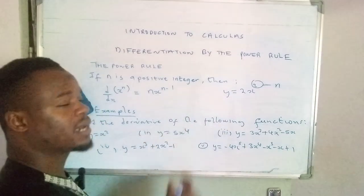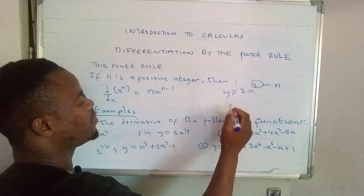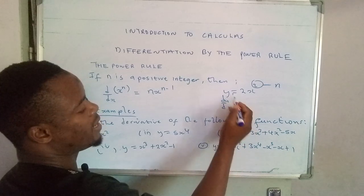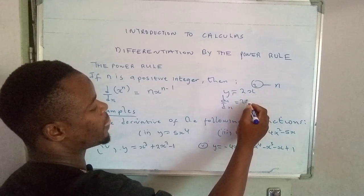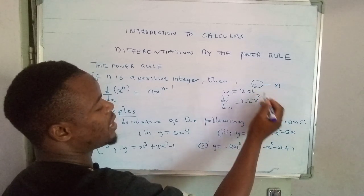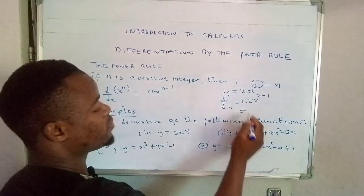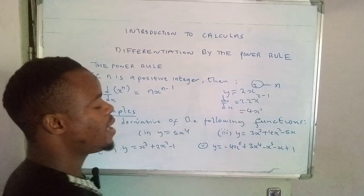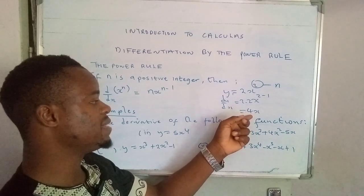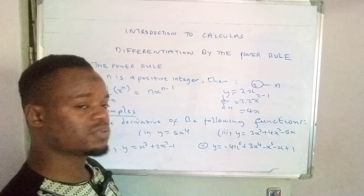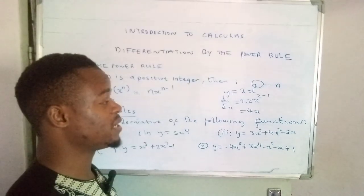If we have the function y = 2x², when you differentiate this function by applying the power rule, the index will drop and dy/dx — the rate of change of y with respect to x — will be found. The index drops and is multiplied by the coefficient of the variable, then you subtract 1 from the power. So the final answer is 2 times 2, that's 4x to the power 2 minus 1, which is 1. In most cases when you have a power of 1 we don't show it. What we have found is the derivative of that function, and the process is called differentiation.